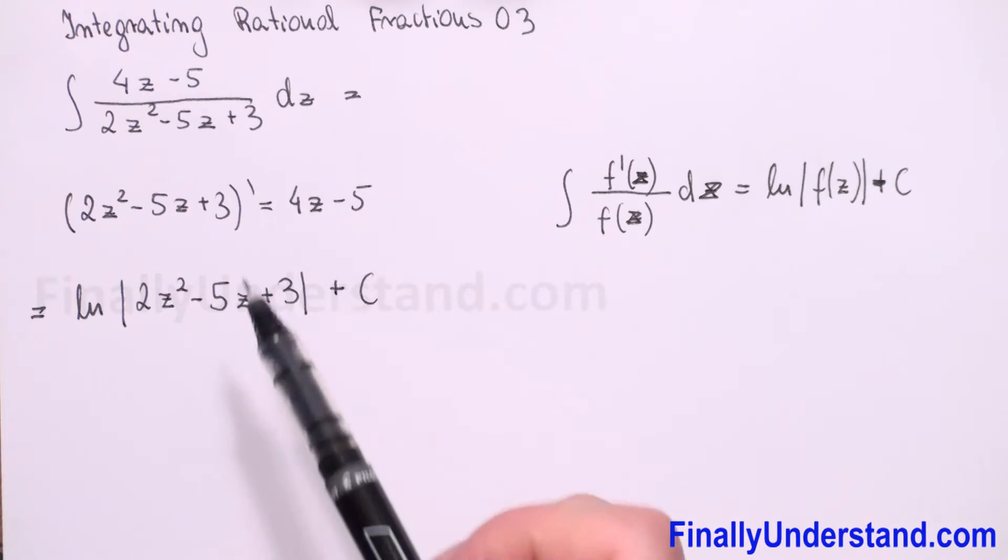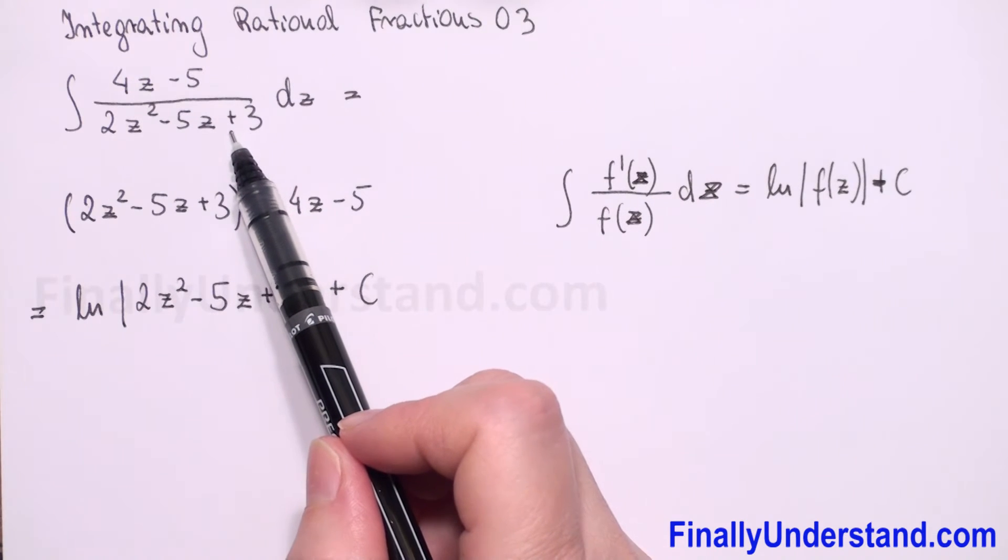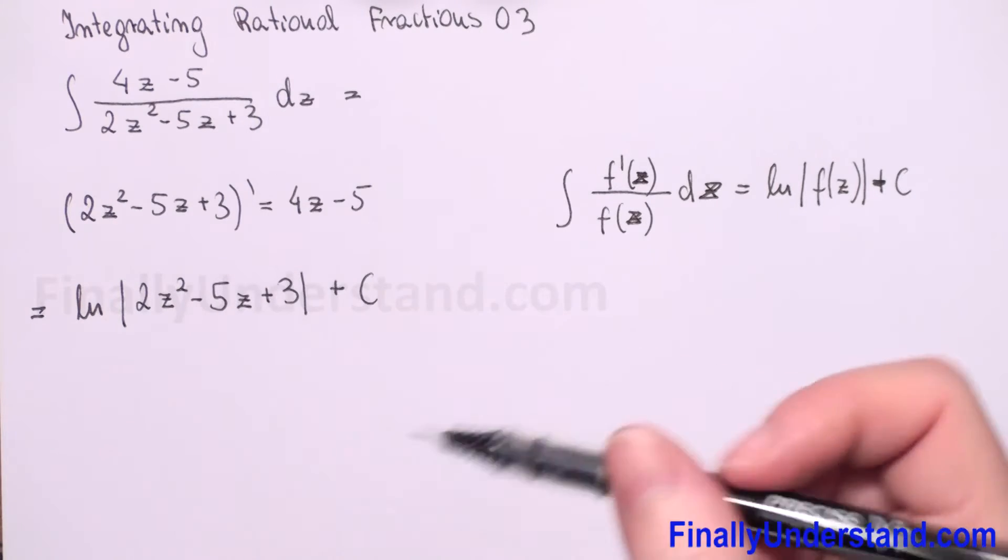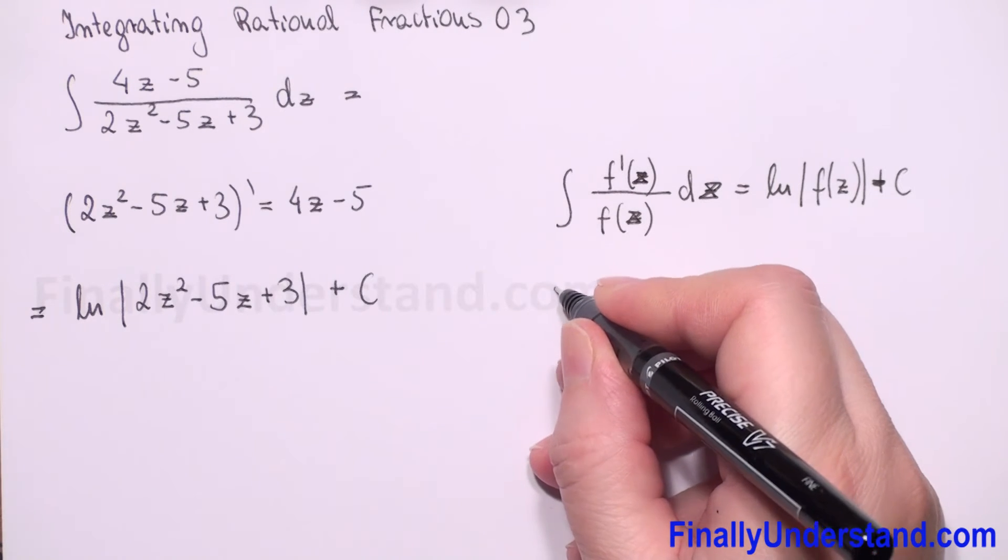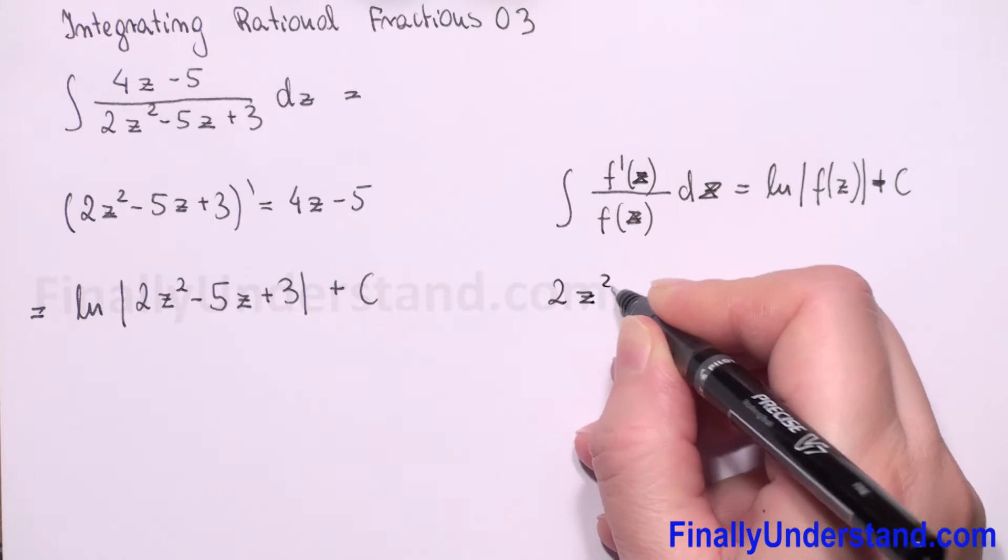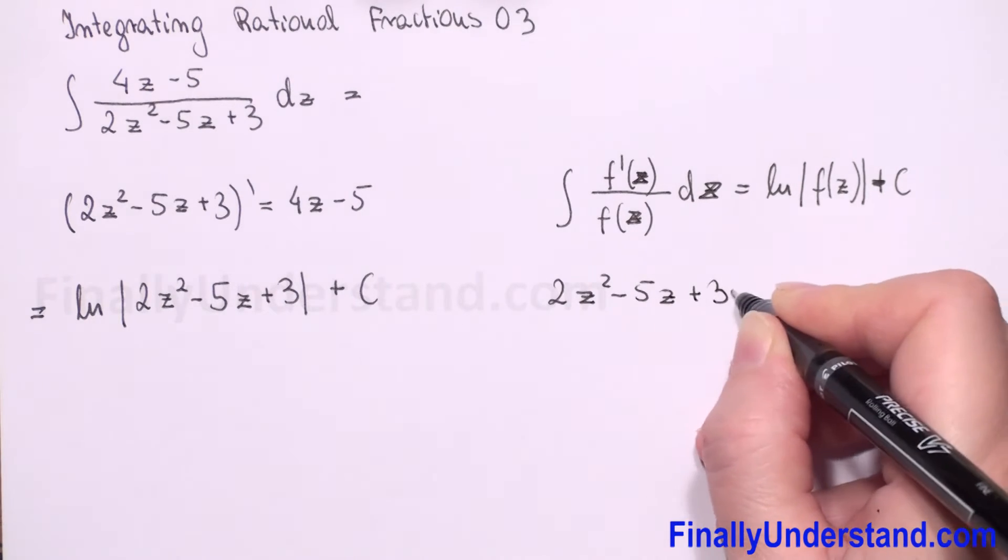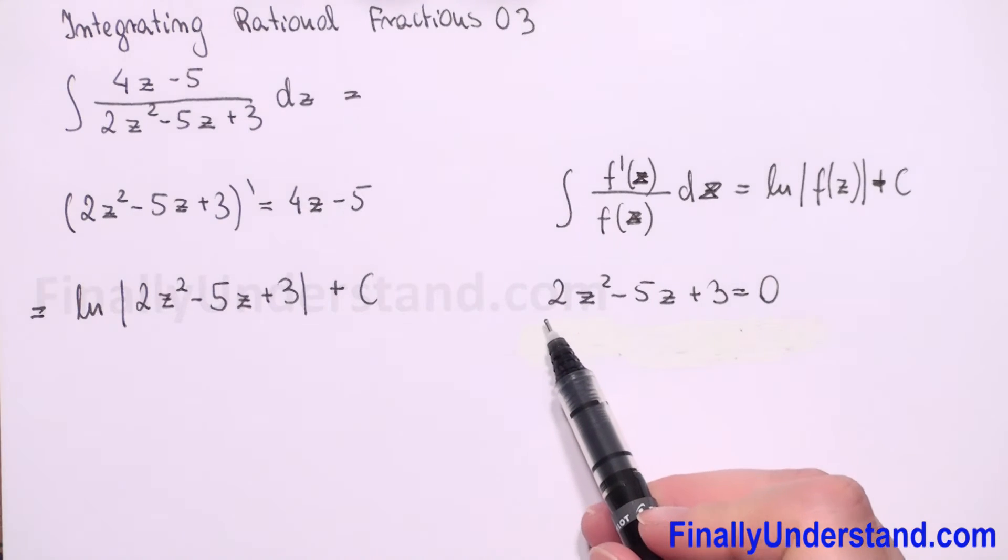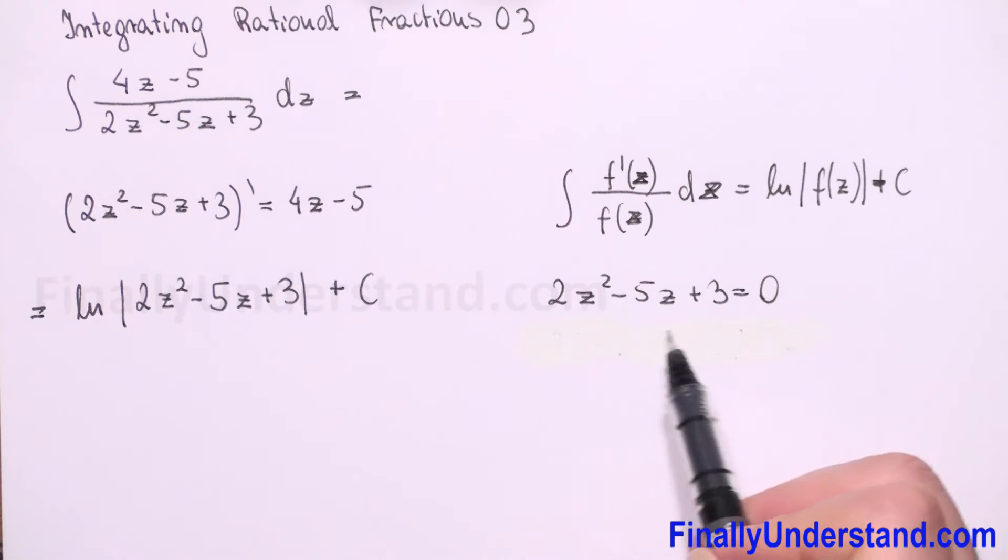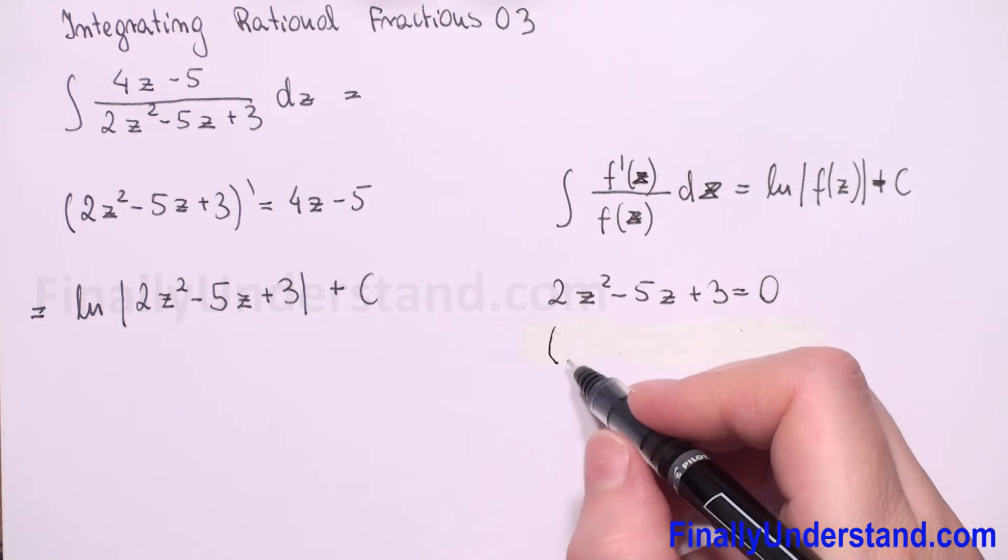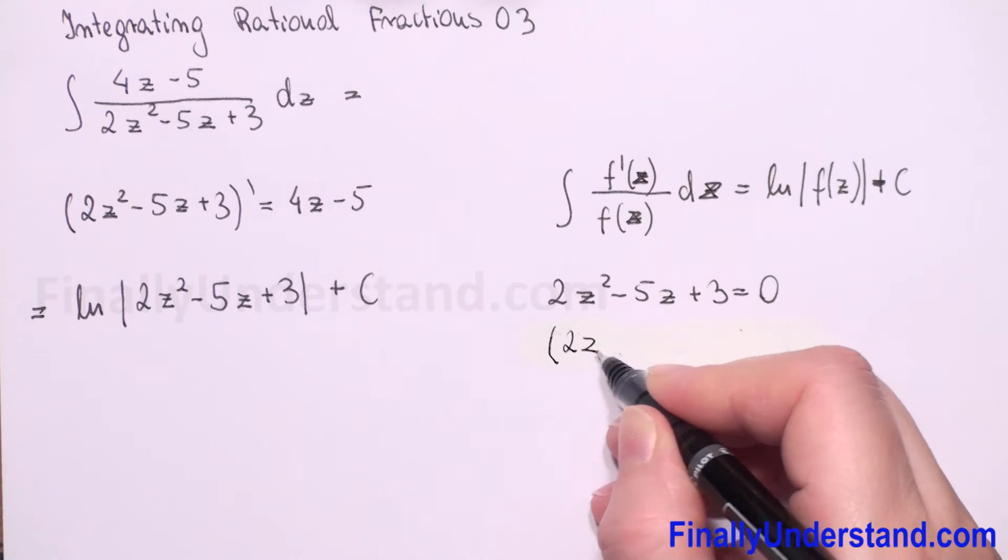Because we have a quadratic function in denominator, so let's check when this will be 0. We have 2z squared minus 5z plus 3 is equal to 0. We can factor left side as a product of linear factors.